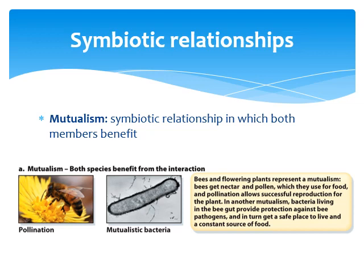Mutualism is basically the best option — a symbiotic relationship in which both members benefit. A great example is bees and flowering plants: bees get nutrition and pollen to make honey, while plants get pollinated — the only way they reproduce sexually. Another example is bacteria living in bee guts, and even in our own guts. The bacteria get a nice home to thrive in, while we're protected against different pathogens.